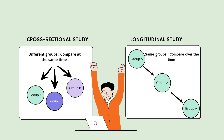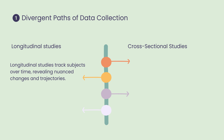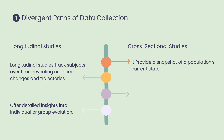Today, let's explore two fundamental approaches — longitudinal and cross-sectional studies — each with its unique strengths and purposes. Let's go through the differences one by one. Number one is diverging paths in data collection. At their heart, longitudinal and cross-sectional studies take different routes in data collection. Longitudinal studies are akin to a time-lapse, tracking the same subjects across various stages of their journey, offering a detailed narrative of change and development over time. Cross-sectional studies, however, are more like a snapshot, capturing a wide array of subjects at a single moment to provide a comprehensive view of the current landscape.